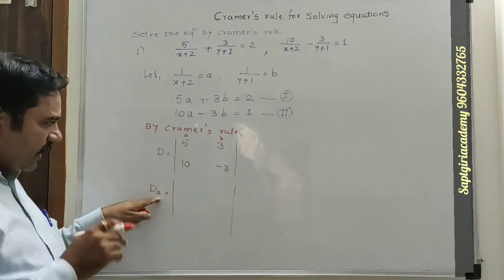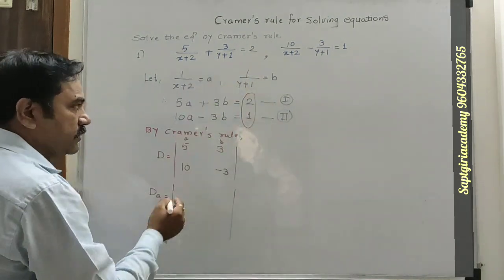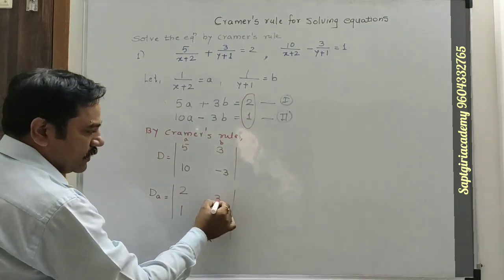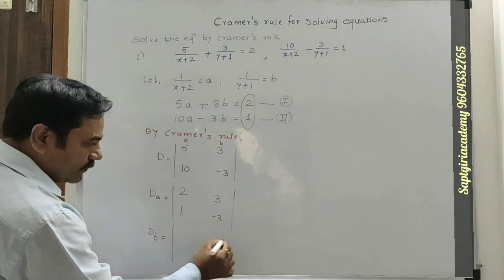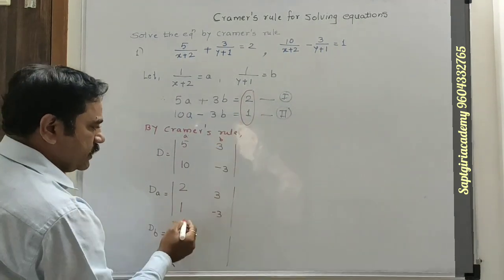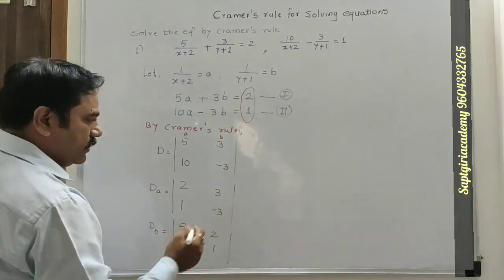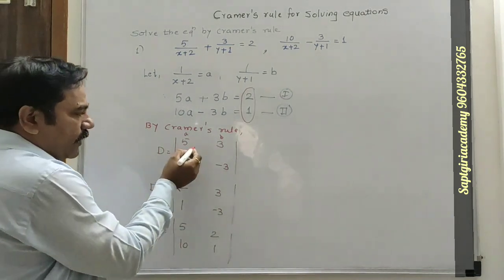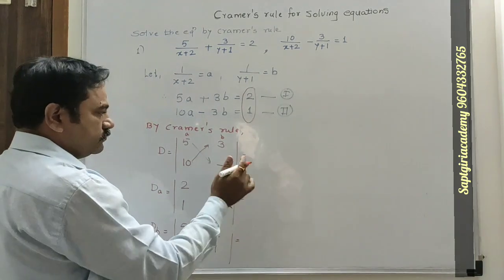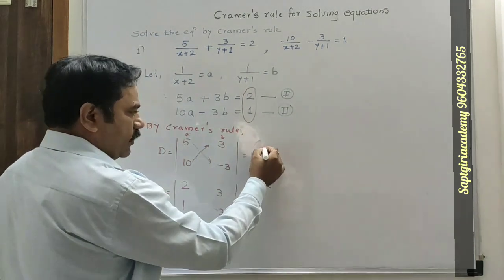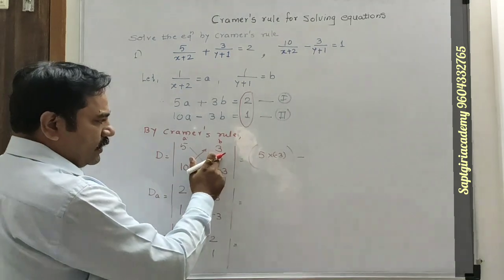When we calculate the determinant for 'a', we replace the column of 'a' with the constants: 2, 1, 3, minus 3. Similarly, we calculate the determinant for 'b' by replacing the 'b' column with the constants: 5, 10, 2, 1.